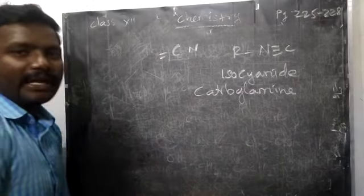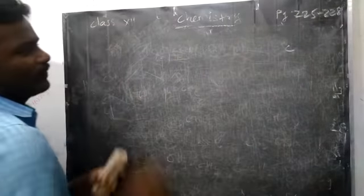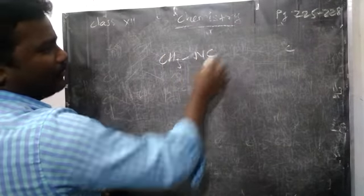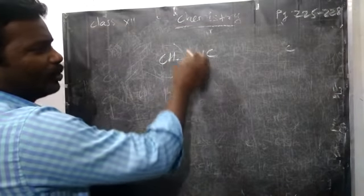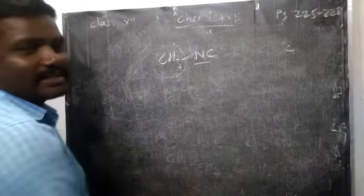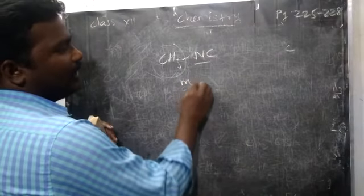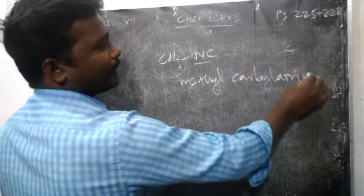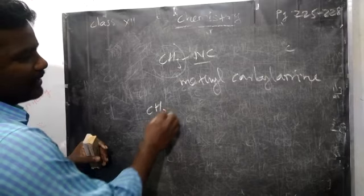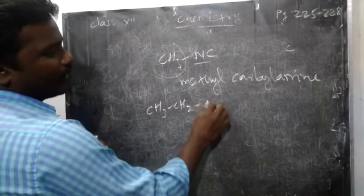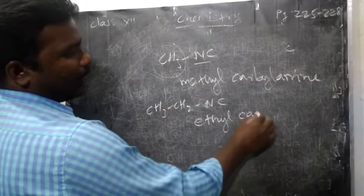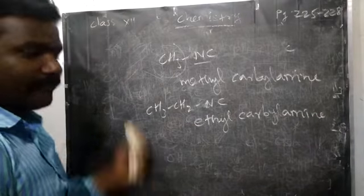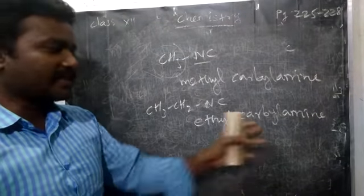So the same way by using this we can name some isocyanide compounds. The first one: methyl isocyanide. This is methyl group — prefix you have to add, suffix you have to write: carbylamine. So methyl carbylamine. If you take ethyl group: CH3, CH2, NC — ethyl carbylamine. Likewise, based on the prefix group, simply you can add the suffix carbylamine.